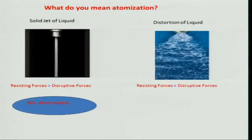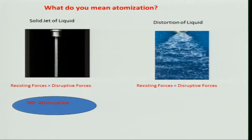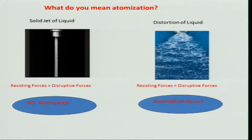What is happening here is that the resisting forces are less than the disruptive forces. As a result, ligaments will be formed from the liquid surfaces; these ligaments will be broken further. When ligaments and other things form, that is called primary atomization. Then fragmentation and interaction with air momentum gives secondary atomization and droplets. Atomization occurs only when the resistive forces are less than the disruptive forces.